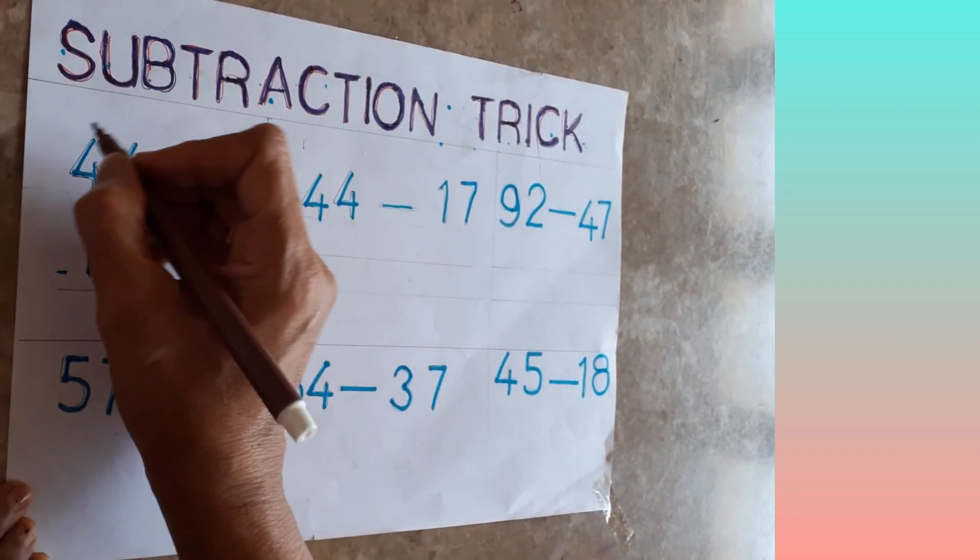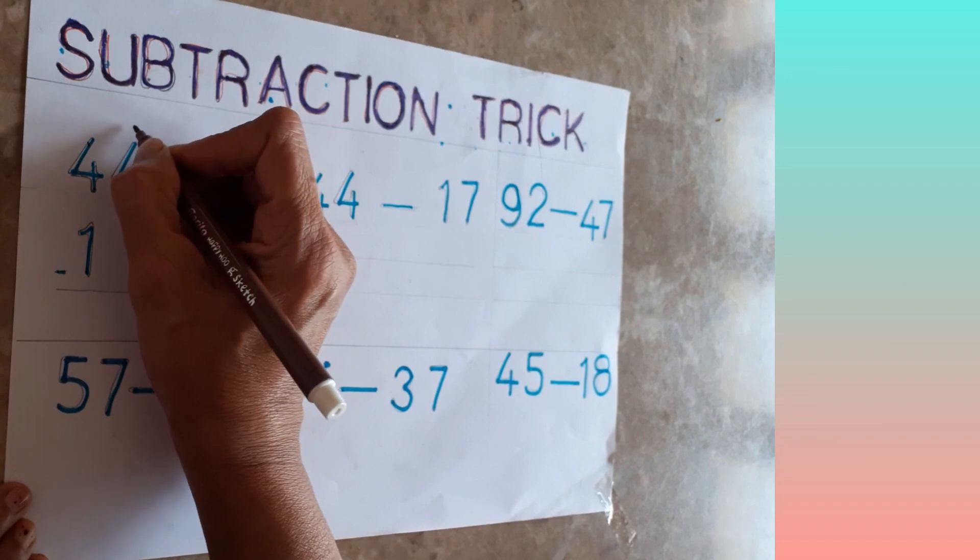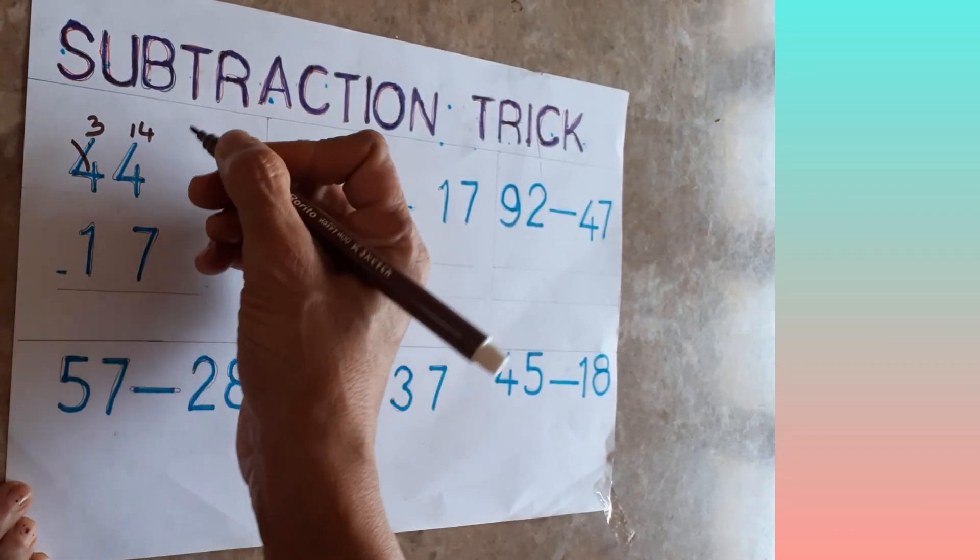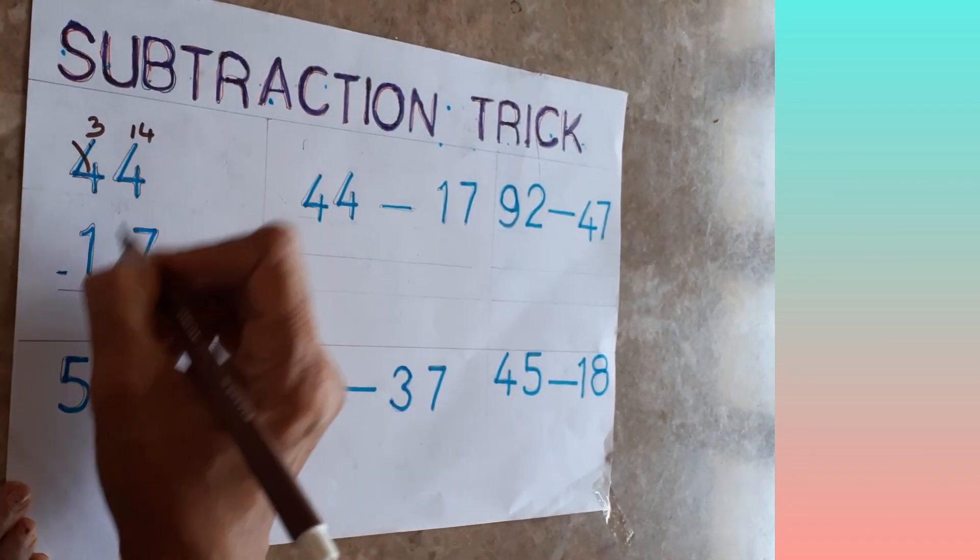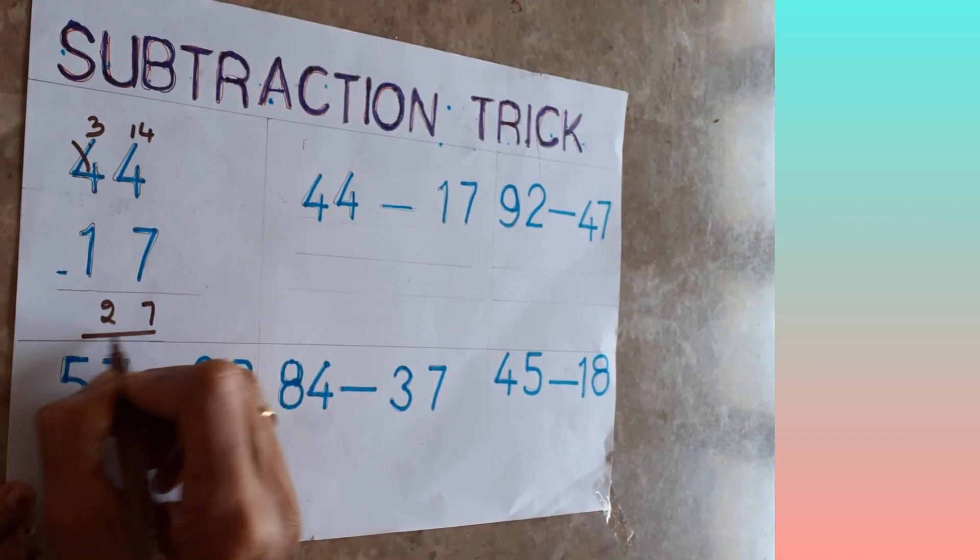You will carry, you have to borrow from here one, then it will become 14, then this will become 3. 14 minus 7 is 7, and 3 minus 1 is 2. This is the way you will do.